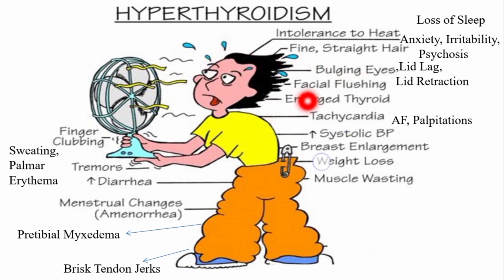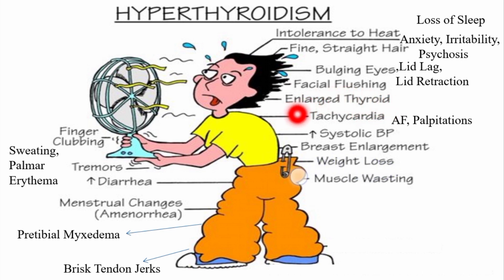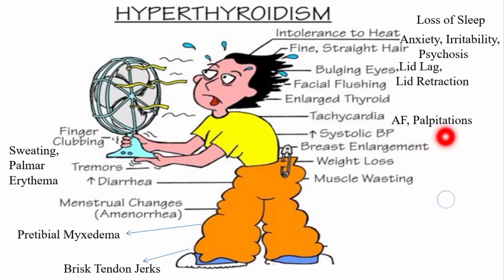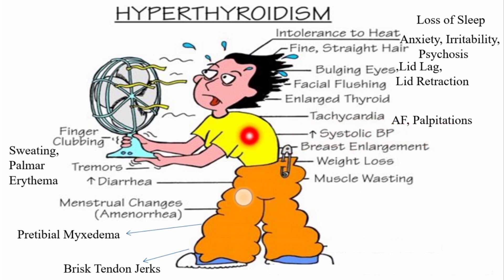There is facial flushing, the thyroid size may be enlarged more than normal. In the cardiovascular system there is increased heart rate or tachycardia, atrial fibrillation, palpitations, and often the systolic blood pressure is raised. There may also be breast enlargement in females. Weight loss is a very characteristic sign and symptom of hyperthyroidism.